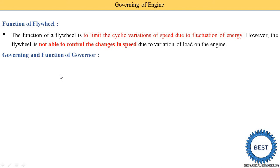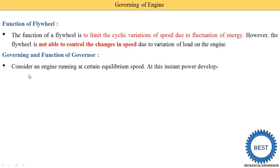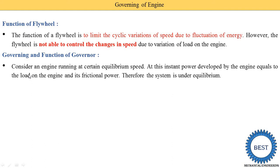Now we understand governing and the function of governing. Consider the engine running at a certain equilibrium speed. At this instance, the power developed by the engine is equal to the load on the engine plus the frictional power. Therefore, the system is under equilibrium.